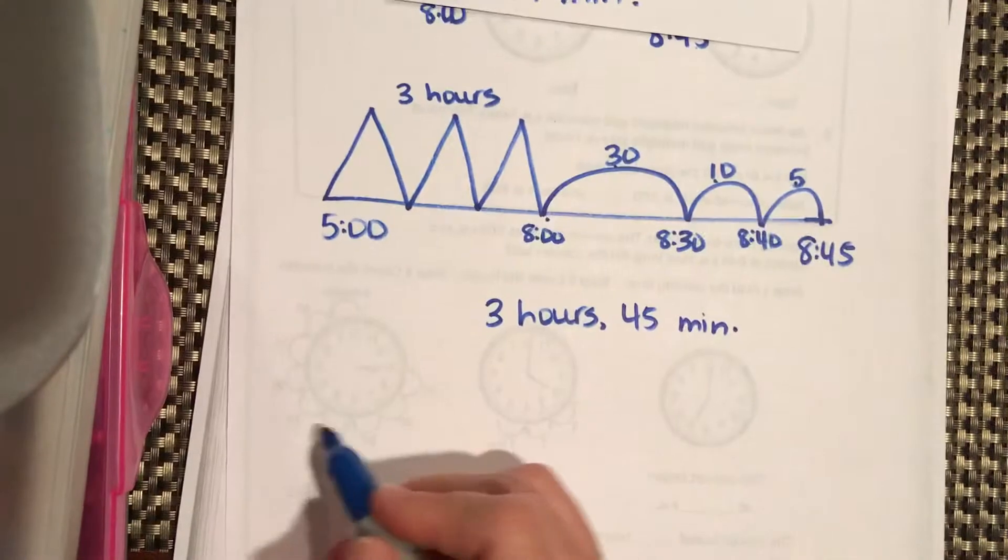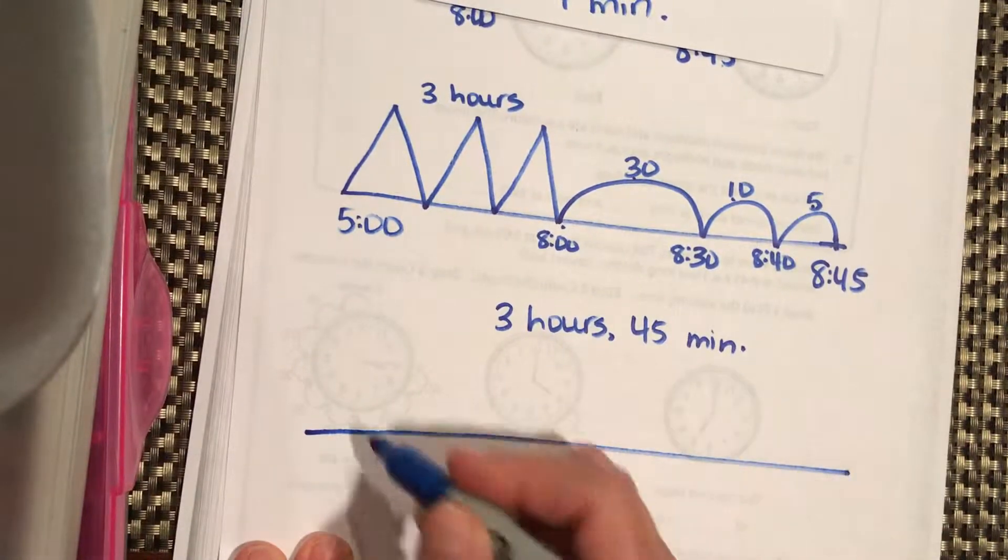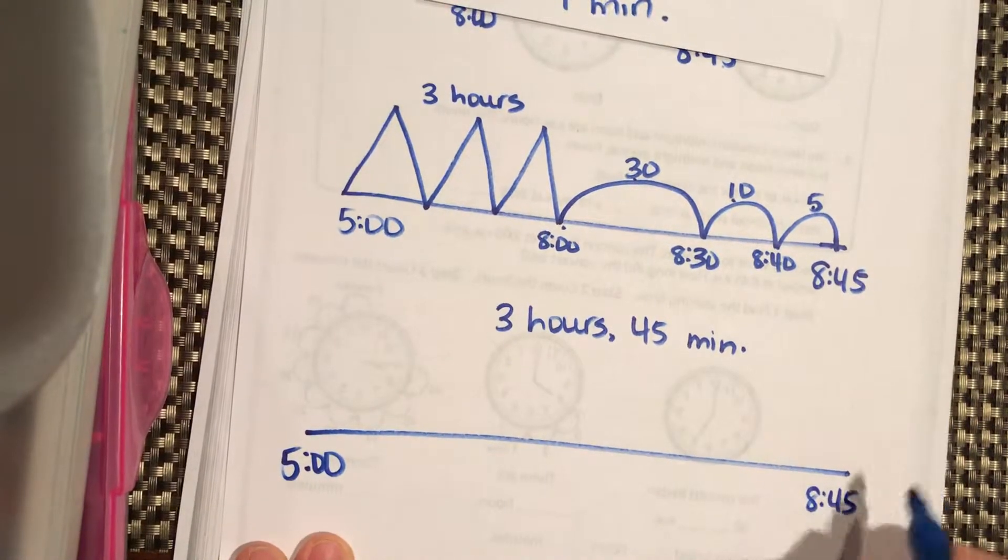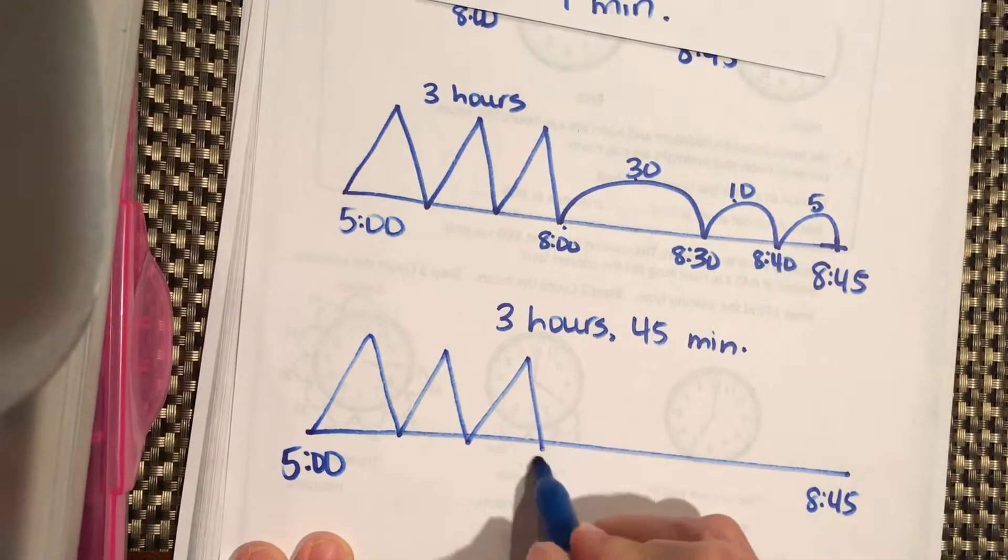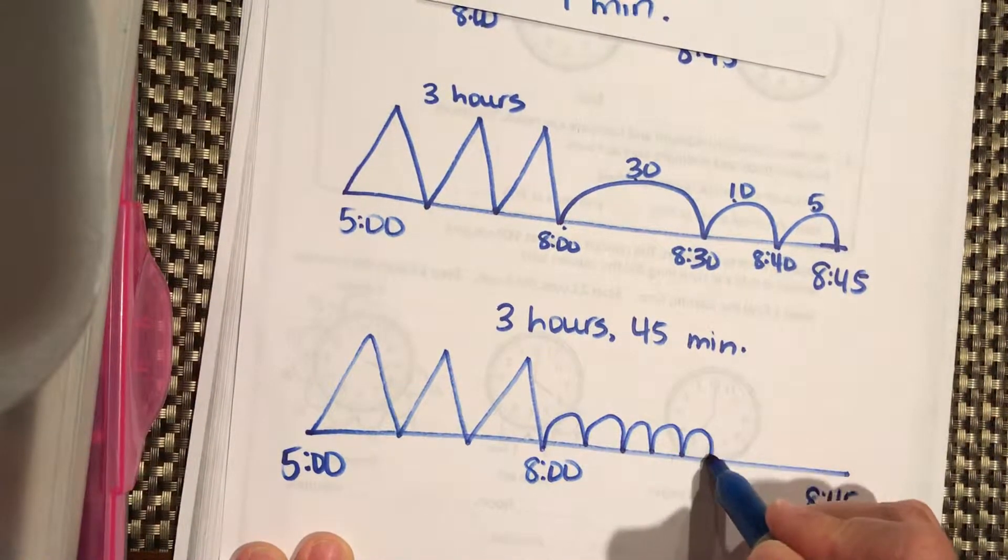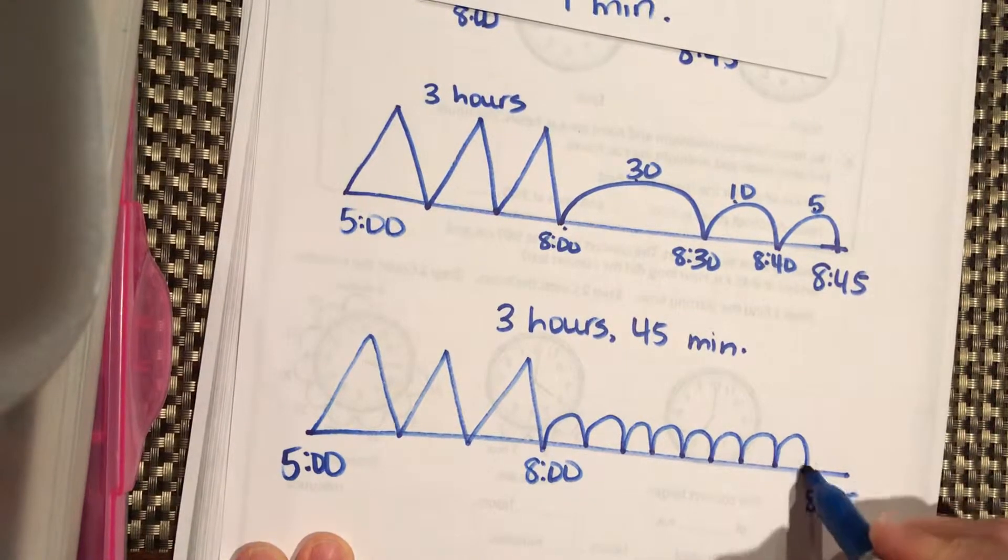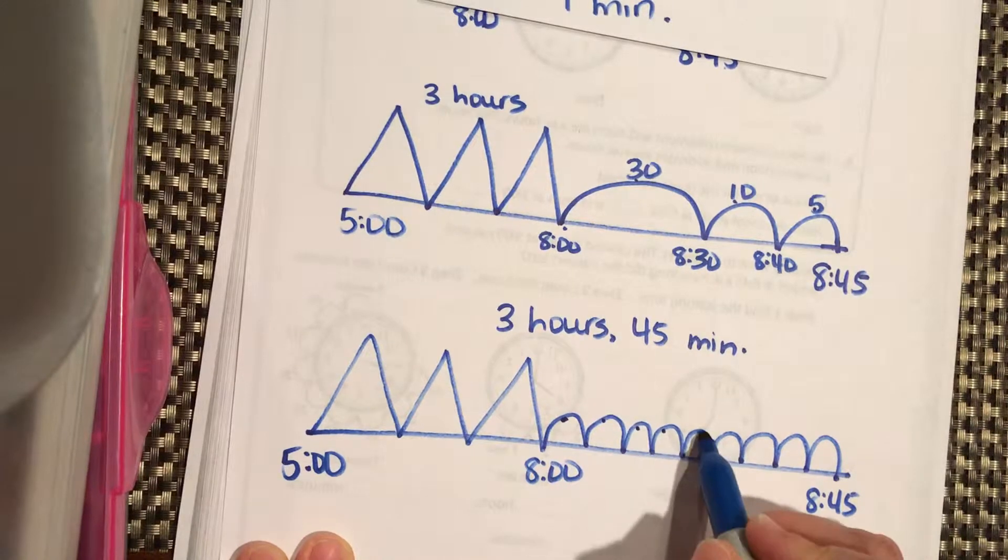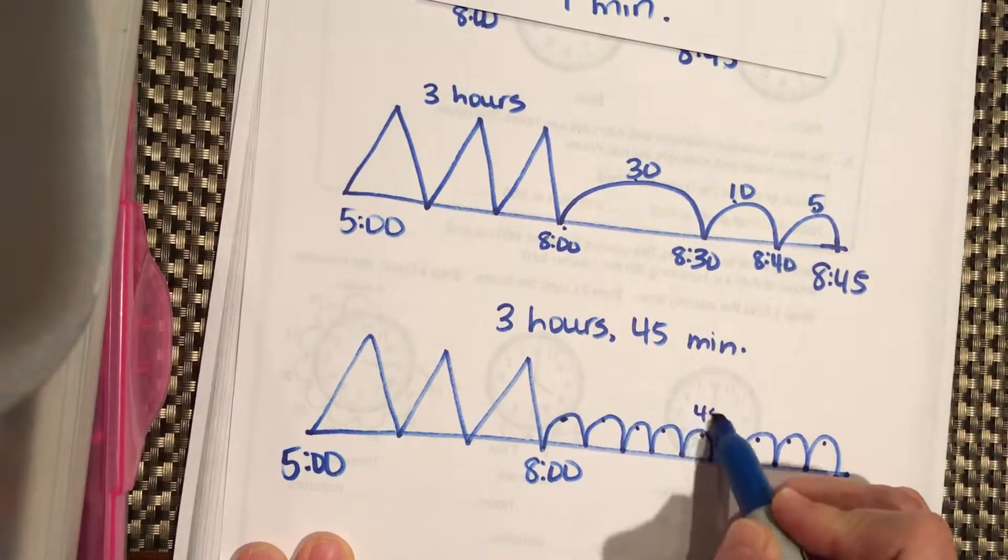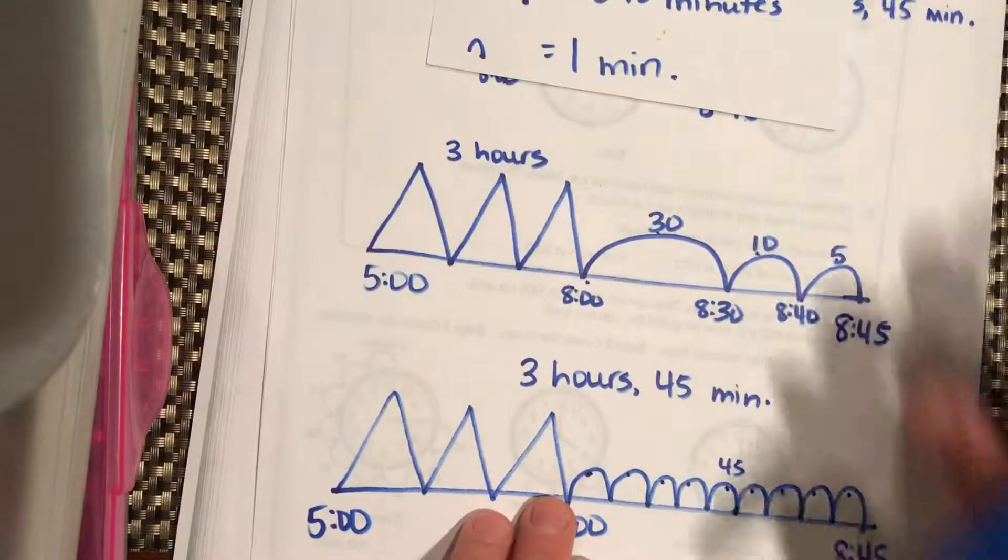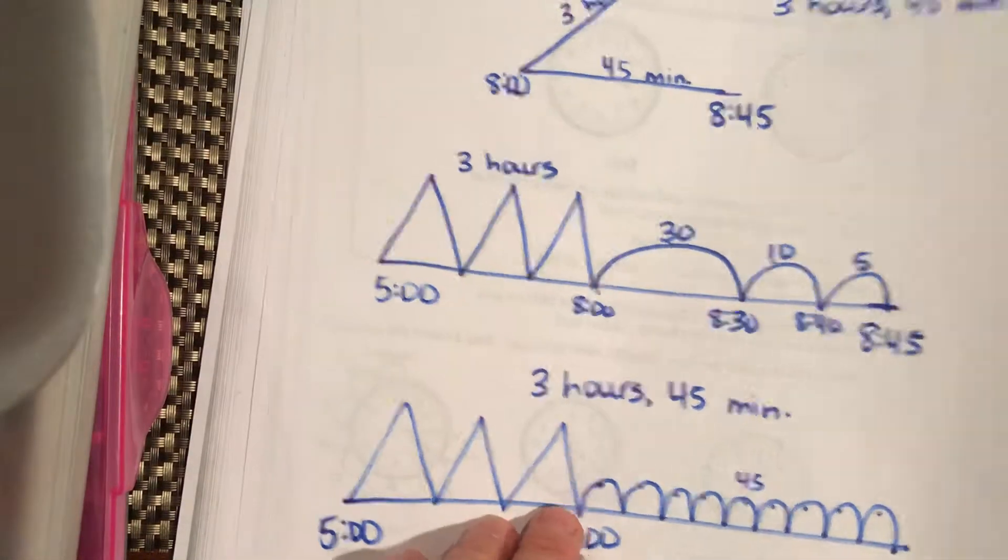But, of course, you could also do like this. Remember, these are your mountains and your hills and your rocks. 5 o'clock to 8:45. You can go 6 o'clock, 7 o'clock, 8 o'clock. And then, you could go 5, 10, 15, 20, 25, 30, 35, 40, 45. We got 5, 10, 15, 20, 25, 30, 35, 40, 45. It would be 45. We have 9 groups of 5. Whatever way works for you is great. They are your mountains, your hills, your rocks.